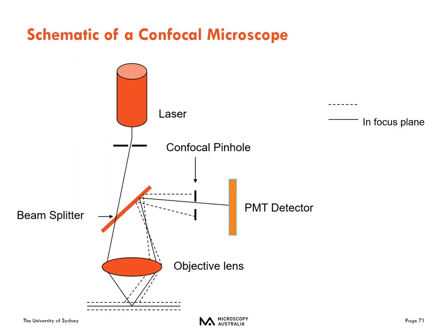Here is a very basic schematic of a confocal microscope. You can see that we've got a laser as our light source directing light through a beam splitter — that's the same as the dichroic mirror filter cube we talked about earlier — through the objective lens. You can see that it's still exciting throughout that full volume, just like a wide field microscope. However, as the light passes back up through the objective, those fluorescence emissions get bent, just like a fluorescence microscope. But those out-of-focus planes get blocked by the confocal pinhole, and only the light from the focal plane is allowed to reach the PMT detector.